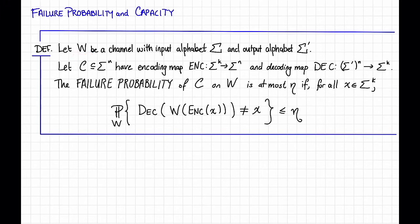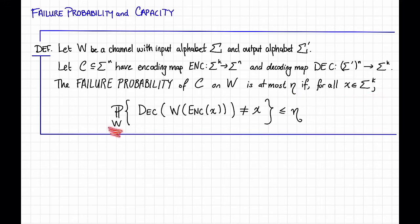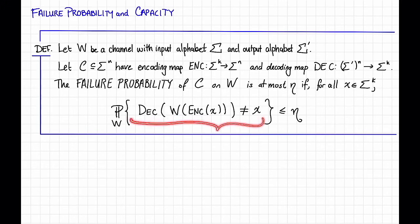More formally, we have the following definition. Let w be a channel with input alphabet sigma and output alphabet sigma prime, and suppose that c is a code of block length n over the alphabet sigma with some encoding map and some decoding map. We say that the failure probability of the code c on the channel w is at most eta — some number between 0 and 1 — if for all possible messages x in sigma to the k, the probability over the channel w that the decoder acting on the channel output is not equal to x is at most eta.